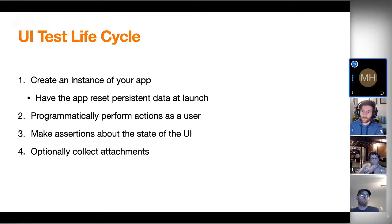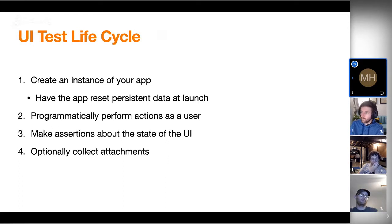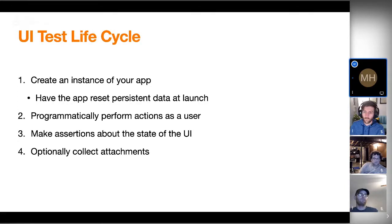Once you have your app loaded up, you programmatically perform actions as a user. You're not calling your internal APIs — rather you're making calls as if you're doing things a user would, like tap this button or swipe left on this thing. Then you make assertions about the state of the UI once you've done those things. So like if you have an onboarding flow, you want to swipe left four times and then you're done with it. You can programmatically swipe left four times and then look up the main view in the view hierarchy, check that it exists and assert that it exists. If it doesn't, your test will fail. If it does, your test will pass.